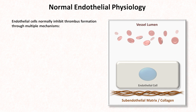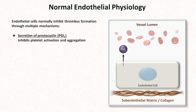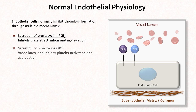What do the endothelial cells, which normally line blood vessels, do in the absence of vessel injury in order to prevent inappropriate thrombosis? First, they secrete prostacyclin, usually abbreviated PGI2, which inhibits platelet activation and aggregation. They also secrete nitric oxide, which locally vasodilates and also inhibits platelet activation and aggregation.